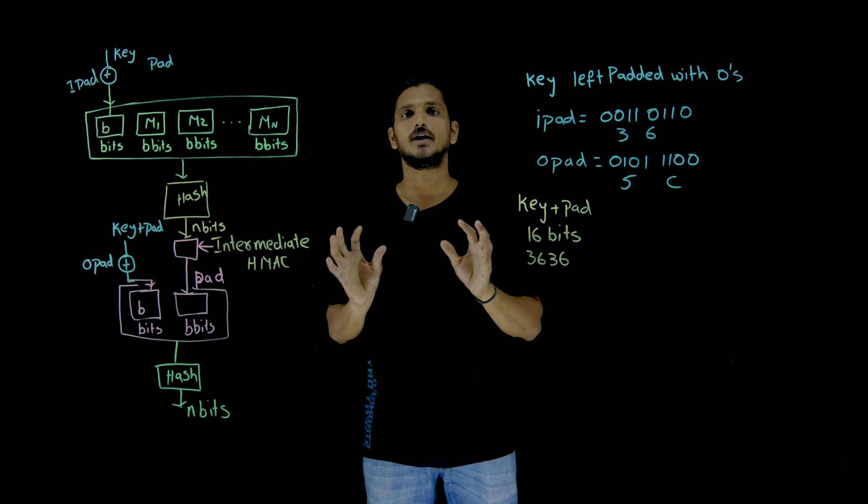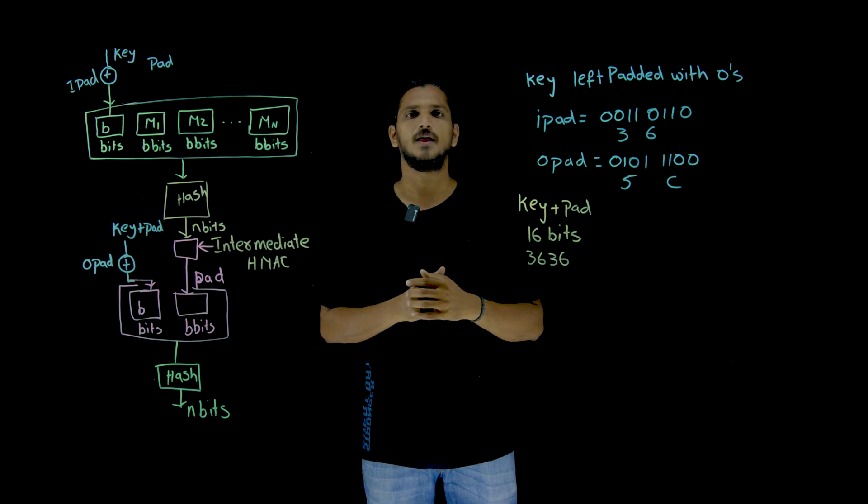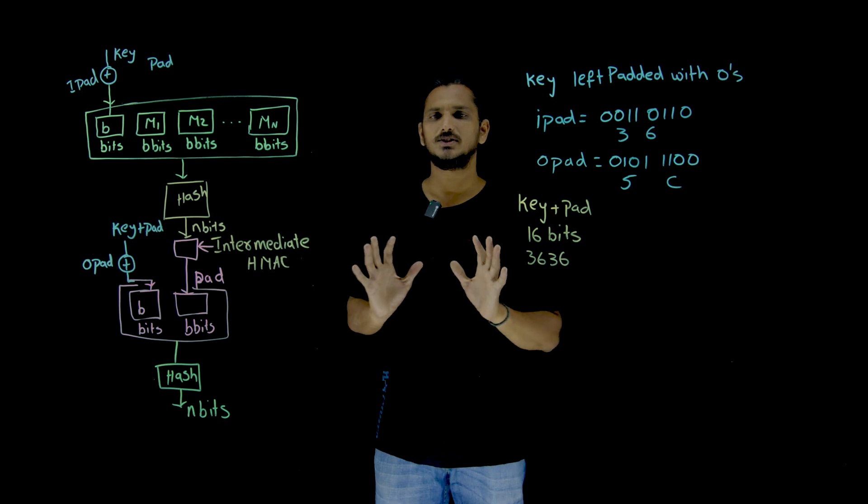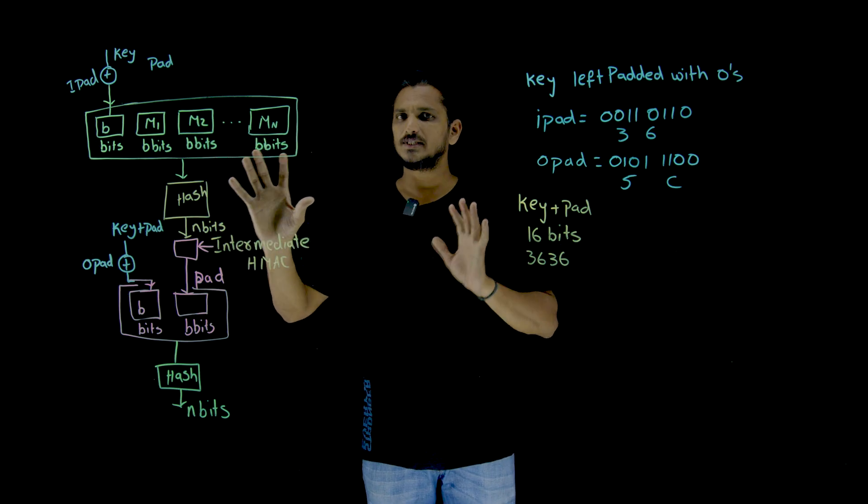How this will be? Let us try to understand the algorithm, how this runs. So in HMAC, it is very easy to understand. In HMAC, if the message is there,